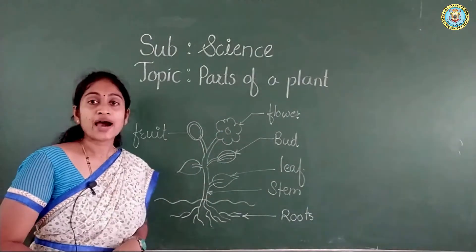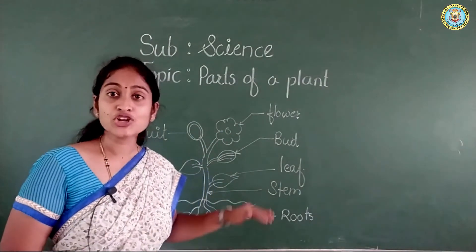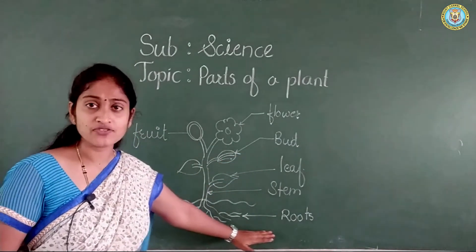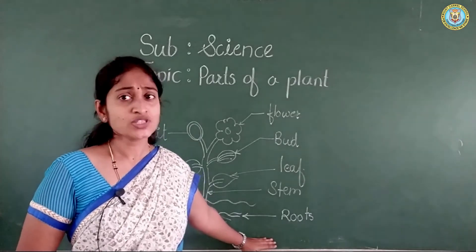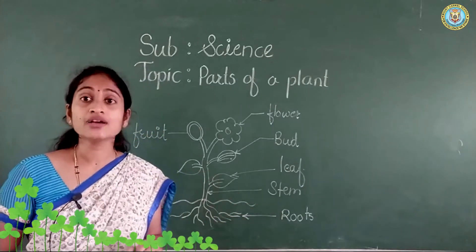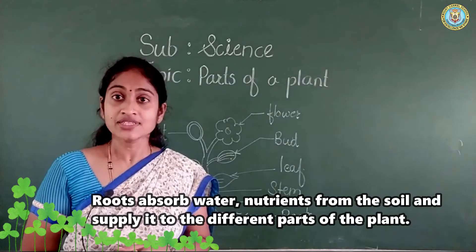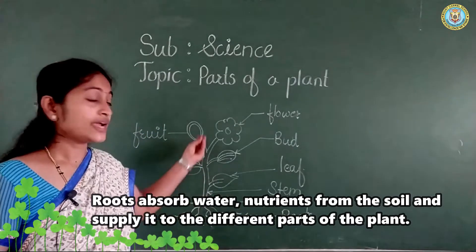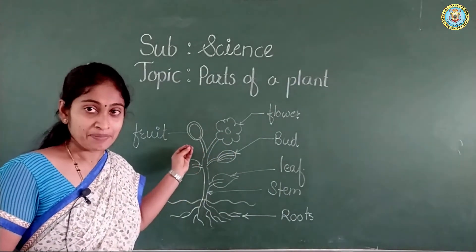These are the parts of a plant. Let us learn the function of each part. Here, roots — what is the function of these roots? What do roots do? Roots are very important in a plant. To suck — to take the water, nutrients, minerals, and it is sucked from the soil and provided to each and every part of a plant.